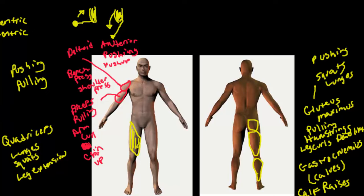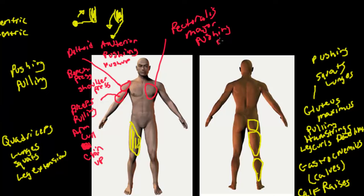Let's talk about the pectoralis major. It's a pushing muscle. Bench press or chest press on a machine, and push-ups as a body weight alternative, would all work out the pectoralis major. Next is the rectus abdominis.